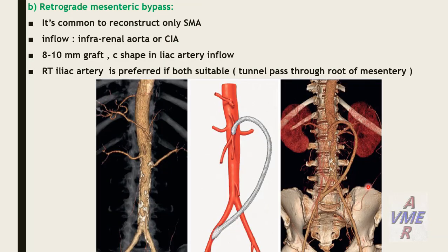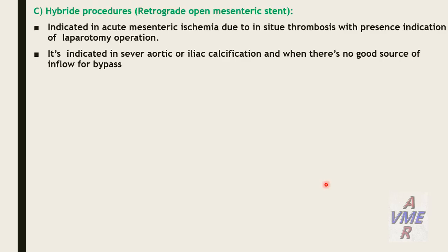Retrograde mesenteric bypass commonly reconstructs the superior mesenteric artery using infrarenal aorta or common iliac artery inflow with an 8–10 mm C-shaped graft. The right iliac artery is preferred; if both are suitable, the graft passes through the root of the mesentery. This picture shows a C-shaped retrograde synthetic graft between the right common iliac artery and the superior mesenteric artery.